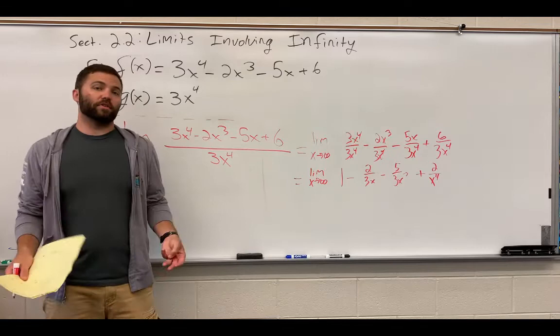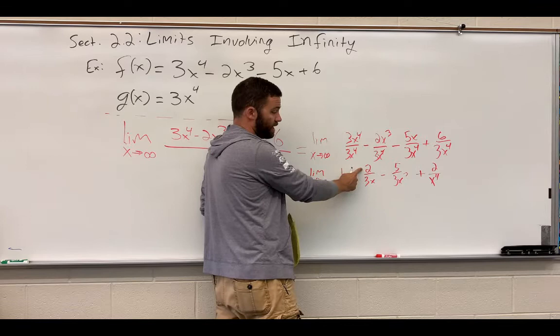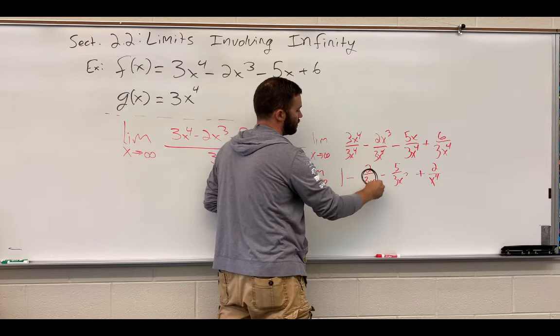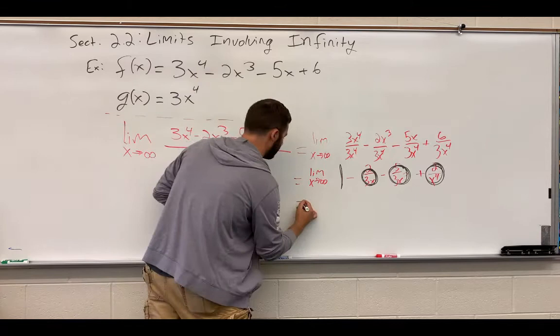And, we think about what happens now if we evaluate this at infinity. If we think about what's the function doing when x gets really large. Well, this is just going to go to 1 minus 2 over 3x. If I put in large numbers here, I'm going to get 2 divided by huge numbers. That's going to go to 0. So, I've got 0. This will do the same thing. 0 and 0. So, what I end up with is 1 minus 0 minus 0 plus 0. Just 1.